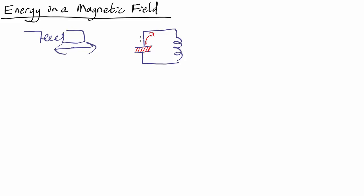Then as the current flows around the circuit the charge goes away, and so we lose the electric field. But at that point, when the electric charge is all gone, you have a really strong magnetic field through the inductor, and so that must also have energy. Then as time goes on the charge flows back and we rebuild the electric field, and the magnetic field disappears in the inductor. So what you're seeing is the energy going from electric field energy into magnetic field energy — empty space with a magnetic field has energy.